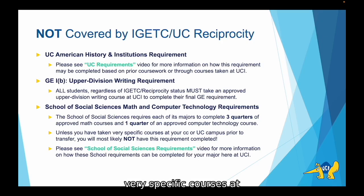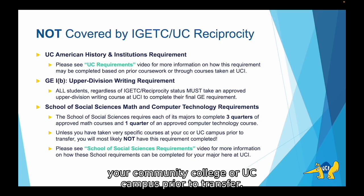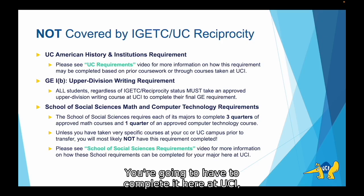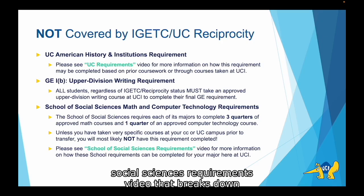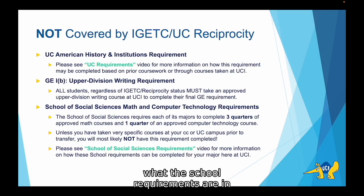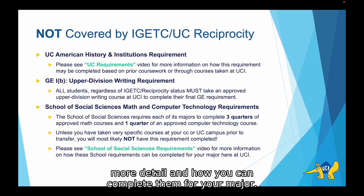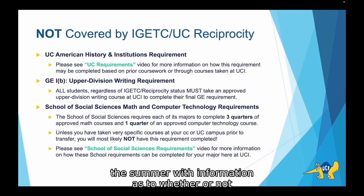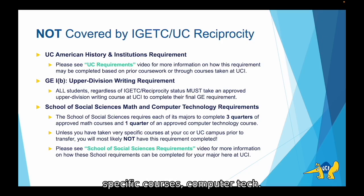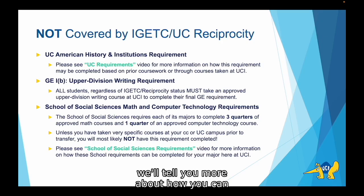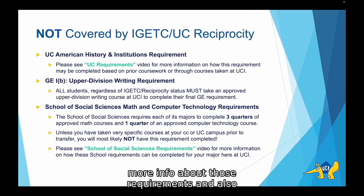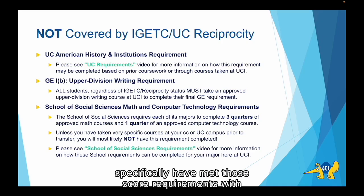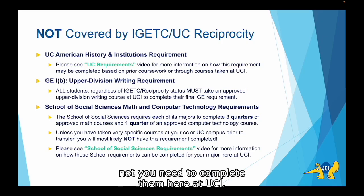Unless you have taken very specific courses at your community college or UC campus prior to transfer, you're not going to have this requirement completed and will need to complete it here at UCI. We have a School of Social Sciences requirements video that breaks down the school requirements in more detail and how you can complete them for your major. As transfer students, you'll also receive advising from our office over the summer with information on whether you've taken those specific courses to complete math and computer tech, and if not, we'll tell you more about how you can complete those requirements.